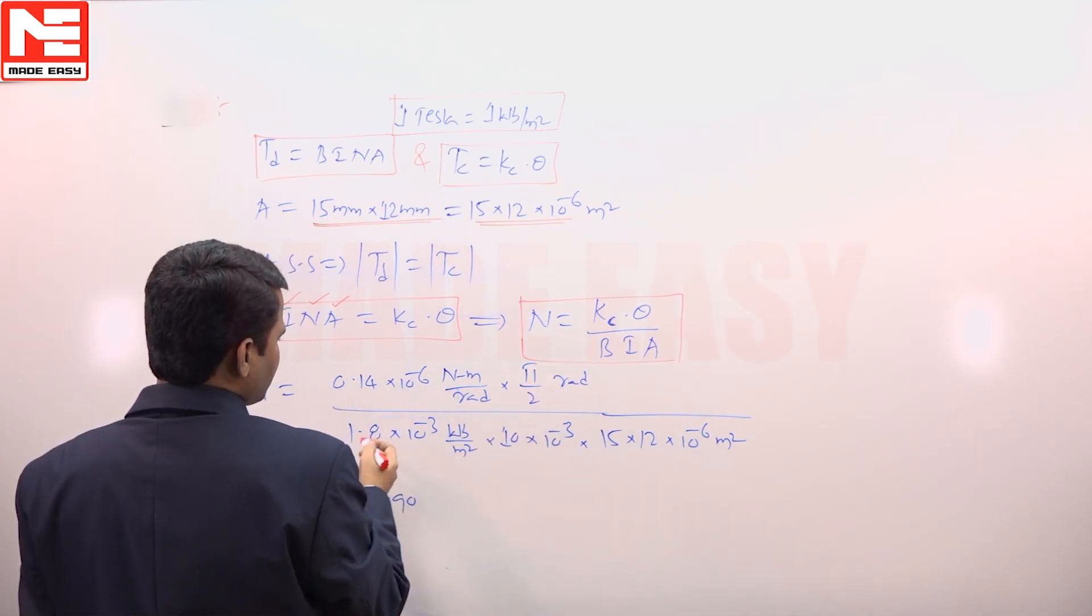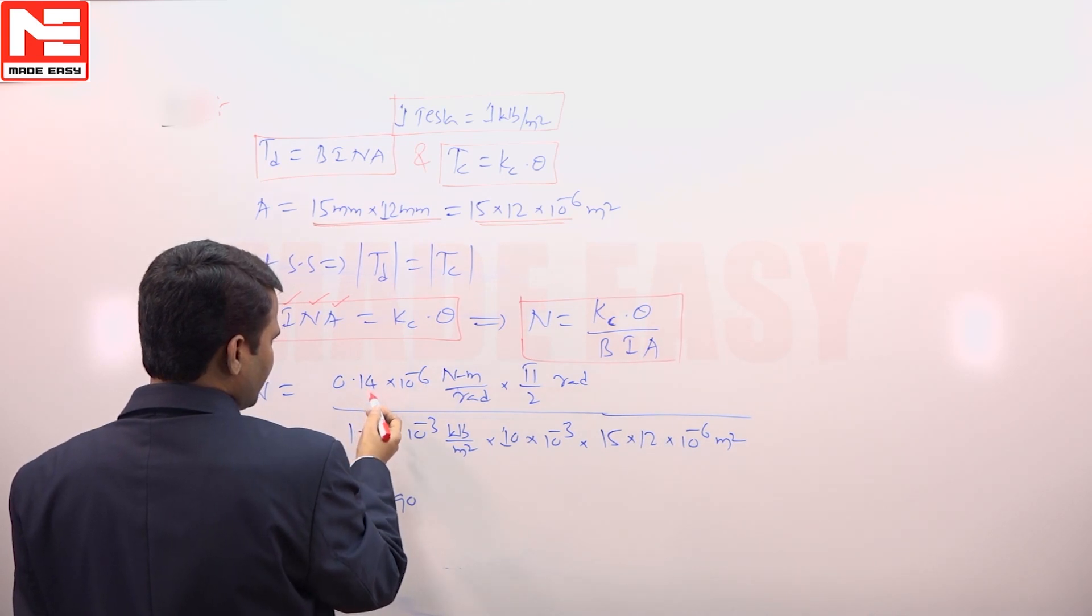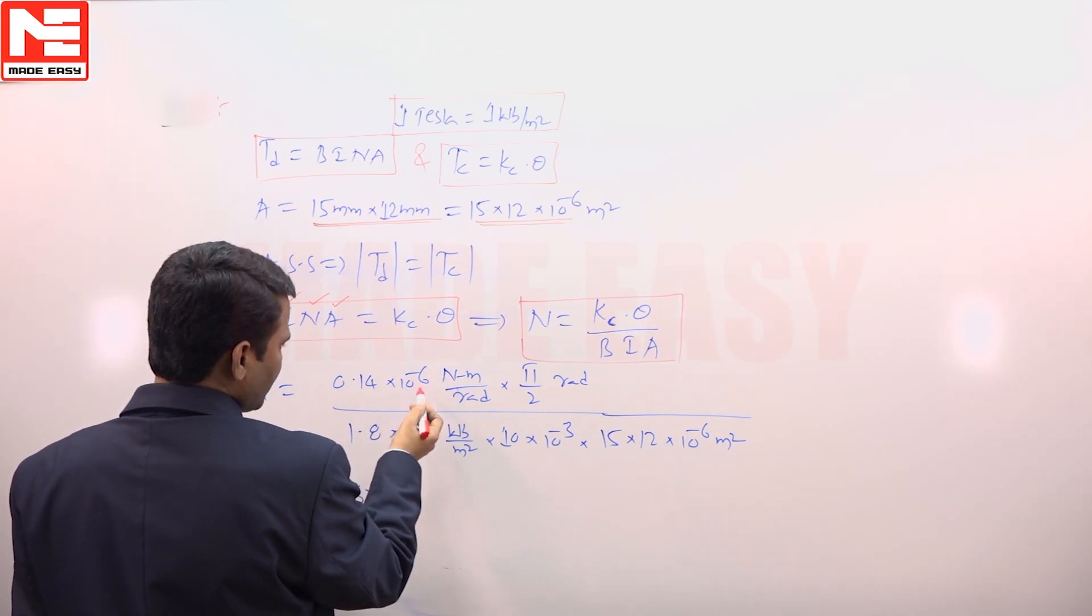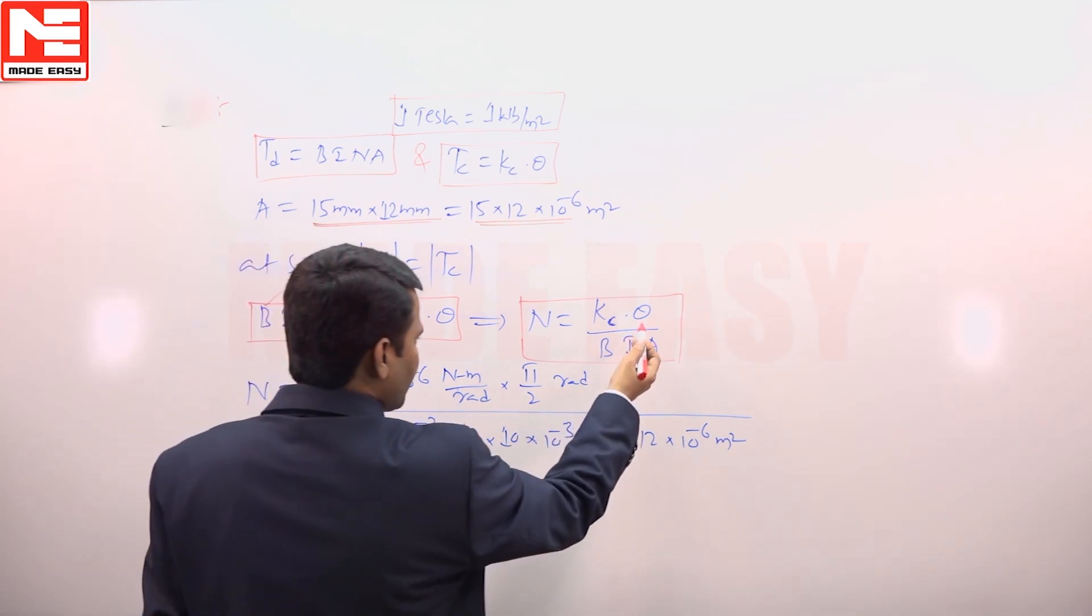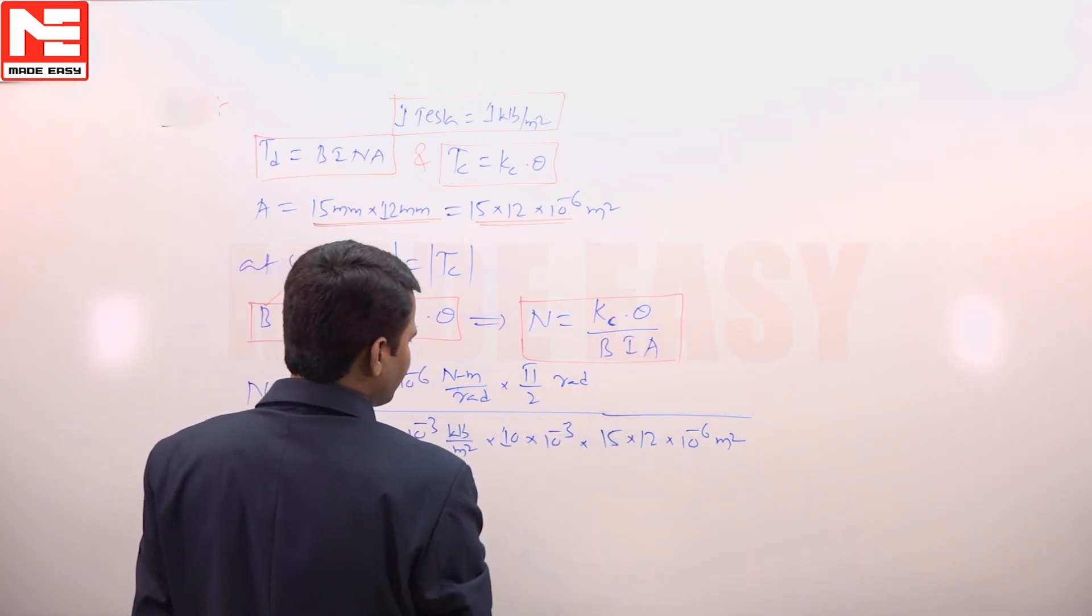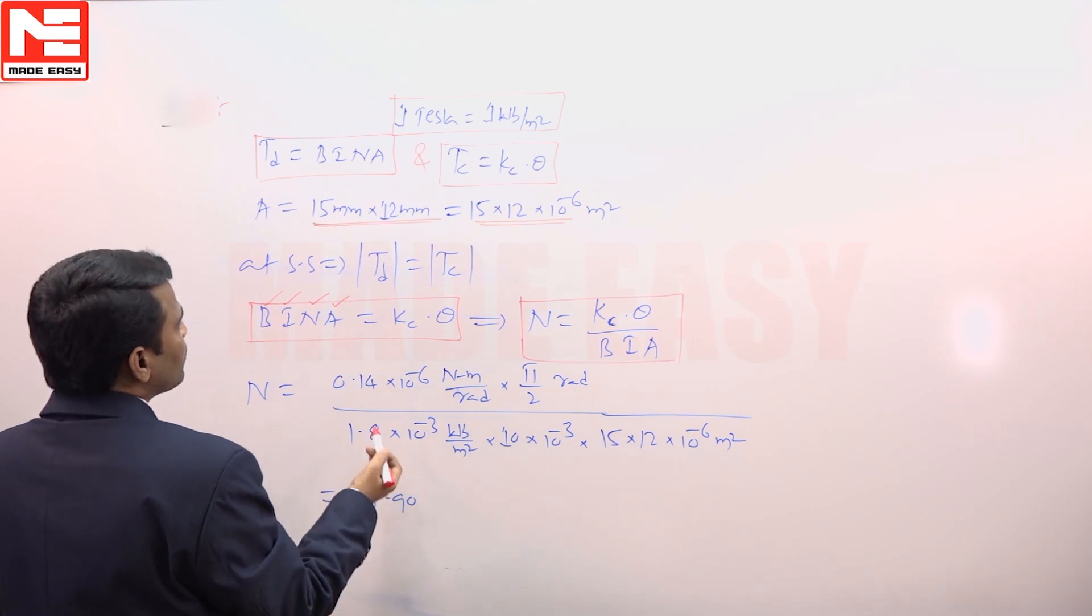Kc is given spring constant, spring constant is 0.14 into 10 to the power of minus 6 Newton meter per radian. Deflection theta is pi by 2 radians.